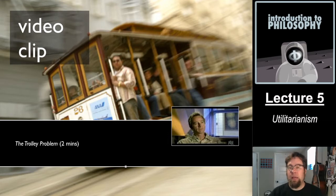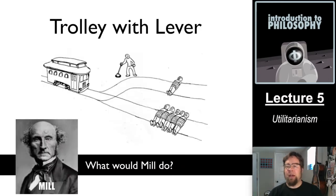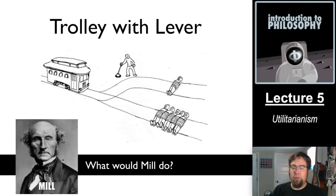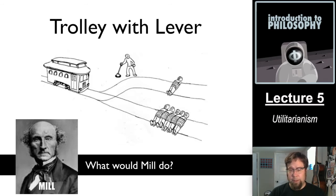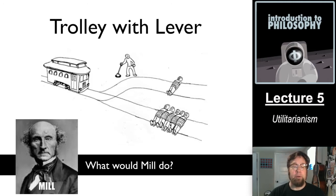Welcome back. One of the things you see in the video clip is this basic idea of what a utilitarian would think about the lever version of the trolley problem. Utilitarianism says the action you should do is the one that maximizes the greatest amount of pleasure over pain in the population overall. If you pull the lever, the trolley is diverted, and while it causes pain and suffering to the one person and their family, even more pain and suffering would be caused if you didn't pull the lever, because five people and all of their families would be involved. So you should pull the lever.